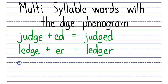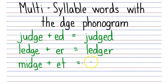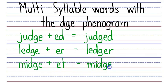Now let's take the syllable midge and add the syllable ET. So we have M, I, D, G, E, plus the syllable ET, and that equals midget. We take the silent E away and use M, I, D, G, then keep the ET. M, I, J, E, T — midget.